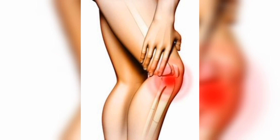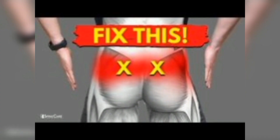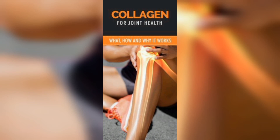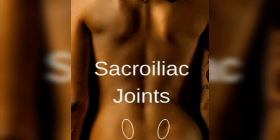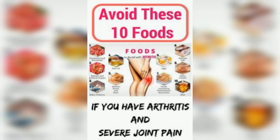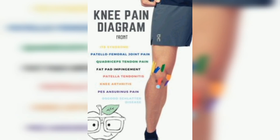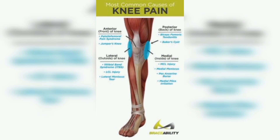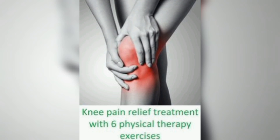Bursitis and tendinitis are conditions that can cause joint pain by inflaming the soft tissue around the joint. Bursitis is an inflammation of the bursae, which are small fluid-filled sacs that cushion the joints. Tendinitis is an inflammation of the tendons, which are the fibrous cords that connect muscle to bone. Both bursitis and tendinitis can be caused by repetitive motion, such as typing or playing a musical instrument.